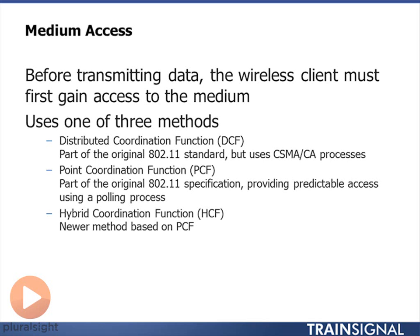The way to think about it is that I have several clients that want to gain access to the RF medium. In 802.11, I can only have one client transmitting at one point in time. If I have two clients transmitting at the same time to the same access point, there could be a collision and there's a risk that neither of them will get heard. So somehow I have to find a way to share the RF medium.